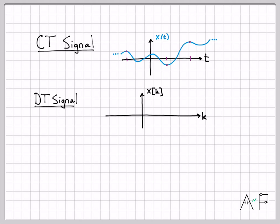When we plot discrete time signals, we plot versus a discrete time variable. I almost always use the variable k to indicate discrete time, so I plot the discrete time signal as x[k]. Other books and people use different variables — sometimes M, sometimes N or L — but I'll use k here.